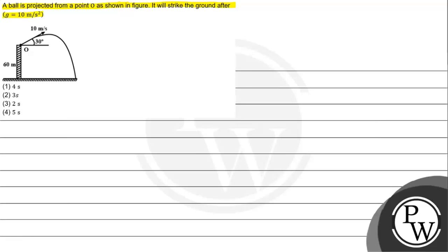We need to find the time. G is given as 10 meters per second squared. Option 1: 4 seconds, option 2: 3 seconds, option 3: 2 seconds, option 4: 5 seconds.